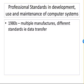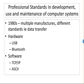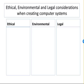Professional standards in the use and maintenance of computer systems are important. In the 1980s there were multiple manufacturers with different standards — for example, different data transfer protocols for mice and keyboard usage. Today, standards such as USB and Bluetooth allow devices to transmit information consistently. In software, TCP/IP is the backbone of how the internet works and communicates, and ASCII is used for data interchange. These standards are really important because when everyone adheres to them, everything works.